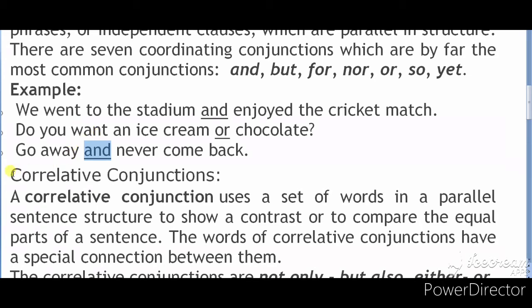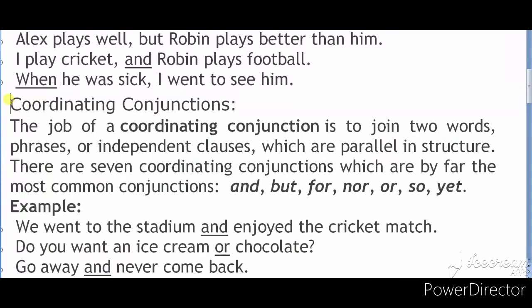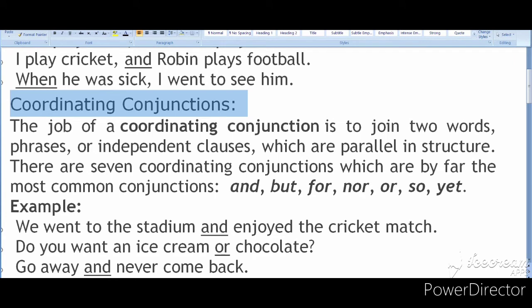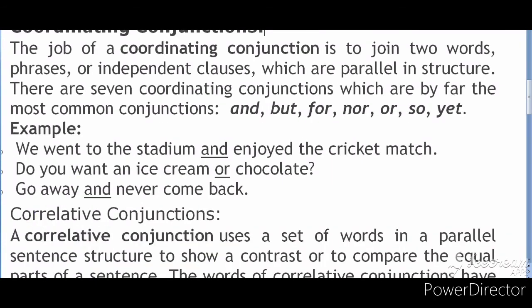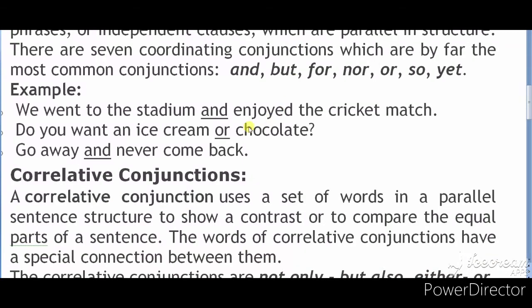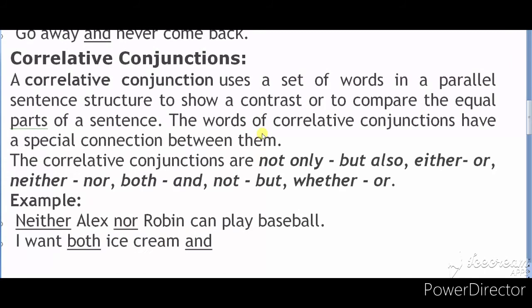The other type is the correlative conjunction. Our second conjunction is the correlative conjunction. In the correlative conjunction, there are some pairs of conjunctions. You can use them to relate or join two sentences.